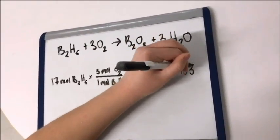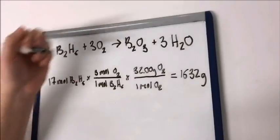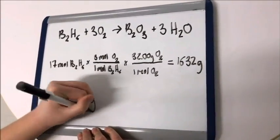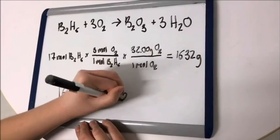That gives us 1632 grams of O2. So it would take 1632 grams of O2 to burn 17 moles of B2H6 completely.